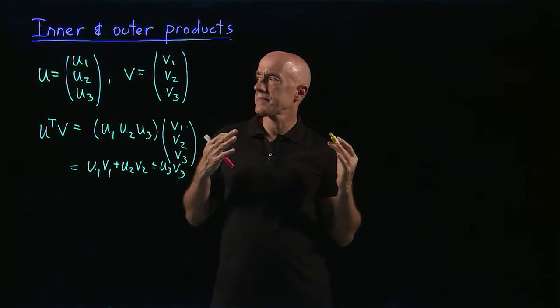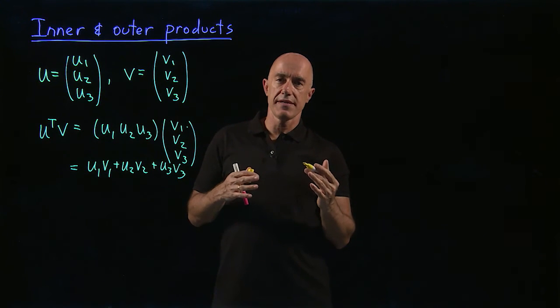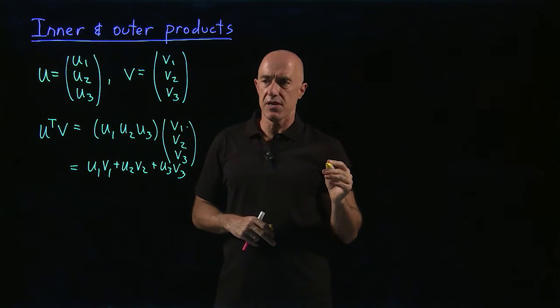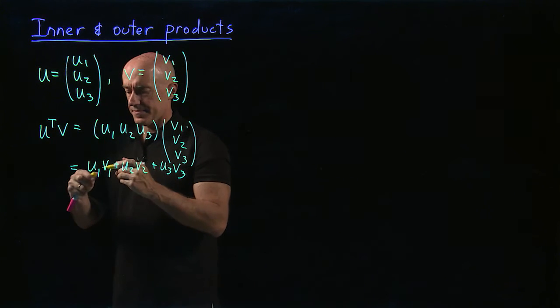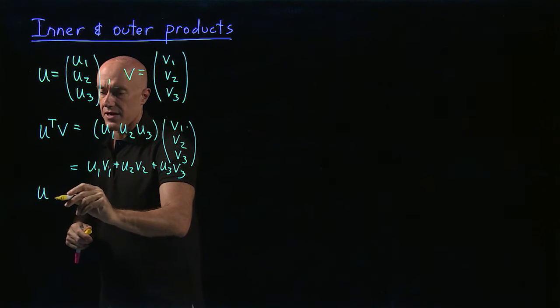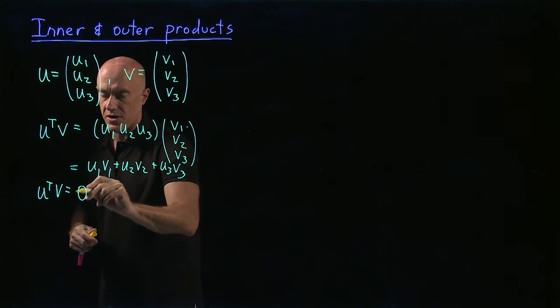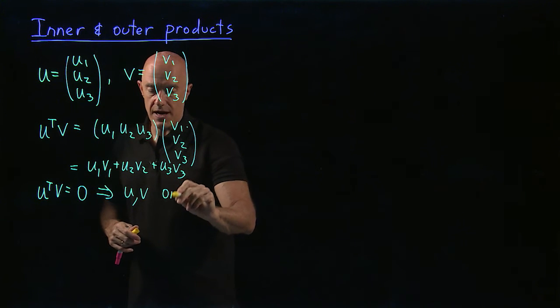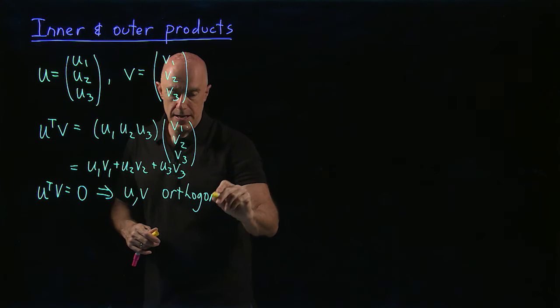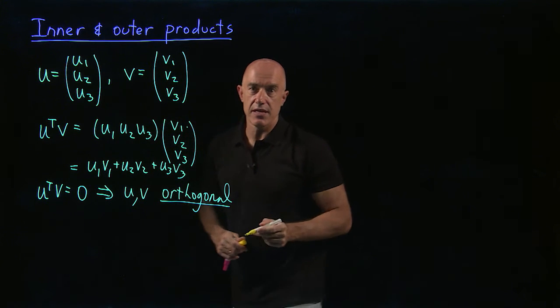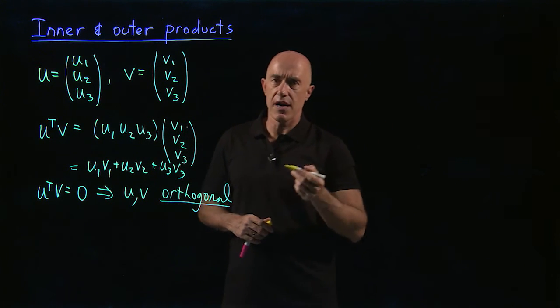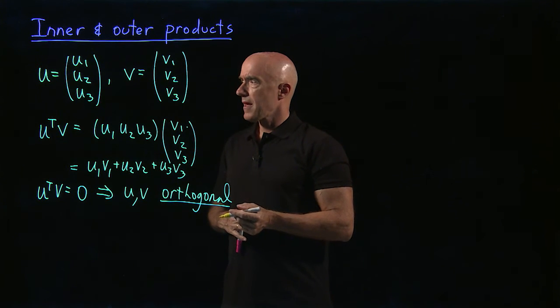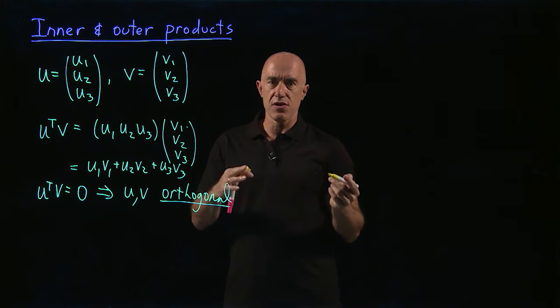We have some definitions here that are useful. So if this turned out to be zero, so if u transpose v equals zero, then we say that u and v are orthogonal. So the word we use in matrix algebra is orthogonal. This is the same meaning as perpendicular for the dot product.